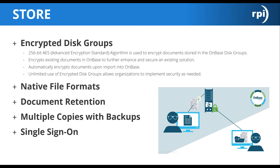For storing your data and documents, encrypted disk groups use a 256-bit AES algorithm to encrypt documents stored in OnBase disk groups. This encrypts existing documents in OnBase to further enhance security, automatically encrypts documents upon import, and unlimited use of encrypted disk groups allows organizations to implement security as needed. OnBase can display documents in native file formats, has a document retention policy, multiple copies can be made with backups, and it does support single sign-on if requested.